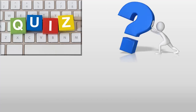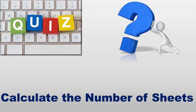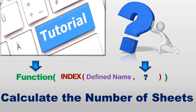It's quiz time. We can get the total number of worksheets in this workbook by using the same INDEX function we created with the same defined name, and just change the second argument with a number, then putting it in a very simple and popular function. What will be the number, and what's the name of this popular function? If you know the answer, write it down in a comment. Now let's resume our tutorial.